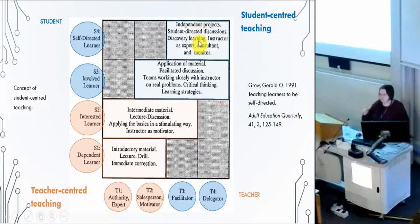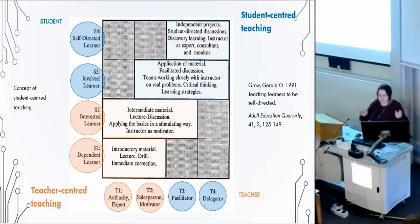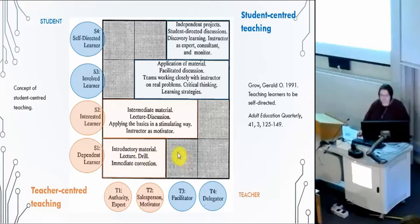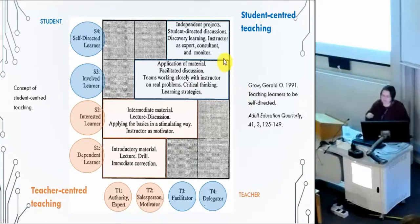Learning is more meaningful for students in that stage. For me, the ideal is the self-directed learner, where the teacher is more like a delegator. But the problem with undergraduate students is that they are not ready for this stage, usually. In Estonia, they are more dependent or interested learners. As Cruz also says, if a learner is in this stage and the teacher wants to be just a delegator, then there's a mismatch between learning stage and teaching stage. So you have to teach learning skills to students first, to enable more self-directed learning.